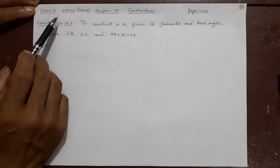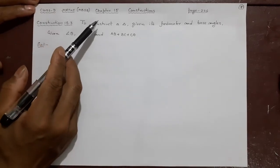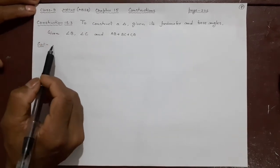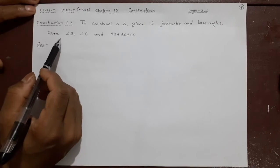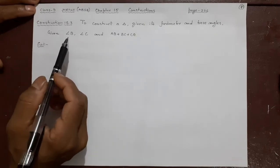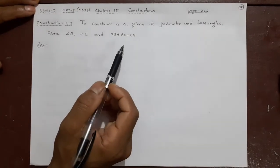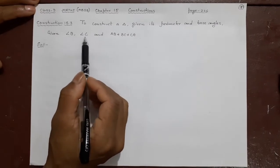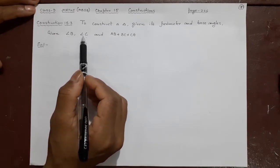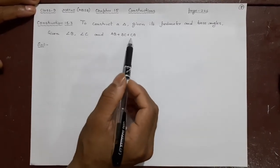This is class 9 maths MBSC chapter 15 construction chapter. Till now we have done two different kinds of triangle formation using the sum and the difference of the sides. Now this time we will make the triangle but with another information - we are given two base angles, angle B and angle C, and apart from that the sum of three sides.